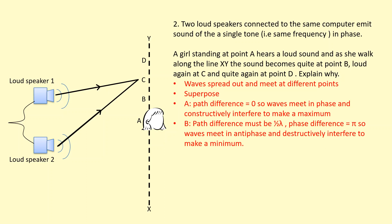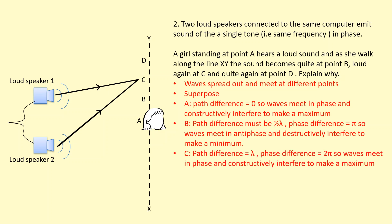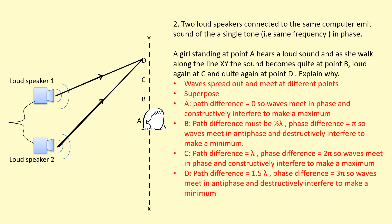As she walks to point C, she hears a maximum again because the path difference has now increased to a whole number of wavelengths, giving a phase difference of 2π — so the waves are in phase again and constructive interference occurs, adding up to make a louder sound. Then at point D, the path difference has increased further to one and a half wavelengths. One and a half wavelengths gives a phase difference of 3π, which equals π — antiphase — so destructive interference occurs and she hears a minimum.